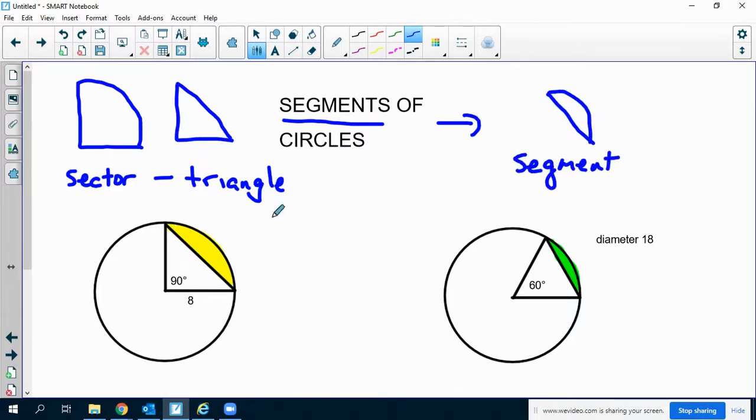So what we're going to do is find the area of those things. Now in order to find the area of a segment of a circle, we do the exact same thing: we find the area of the sector, then we subtract the area of the triangle, and that gives us the area of the segment. So that's basically how we're going to do all of these problems.